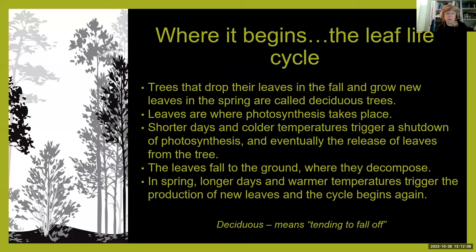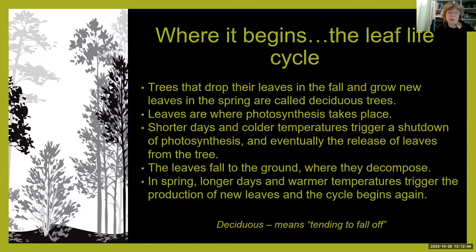I'm going to talk about leaving your leaves and why this is a really important component in the life cycle of our wildlife and trees. In fall, trees drop their leaves — we're in a deciduous forest here on the east coast, and this has been going on for millennia. The leaves are where photosynthesis takes place. As days get shorter and temperatures get colder, it triggers a response in trees to stop photosynthesis and release those leaves.